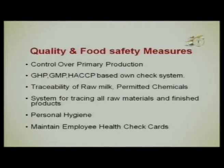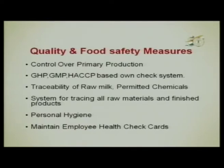The quality and food safety features required for export of milk products begin with control over primary production, as the whole supply chain approach is gaining importance every day. GHP, GMP, and HACCP-based check systems, traceability of raw milk, permitted chemicals, and systems for tracing all raw materials and finished products are essential. Traceability mechanisms must be available so that in case of any non-compliance, the source of the problem can be identified.